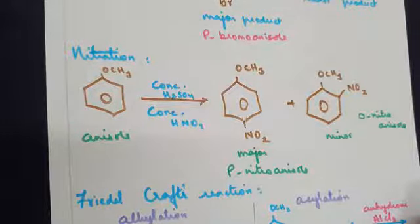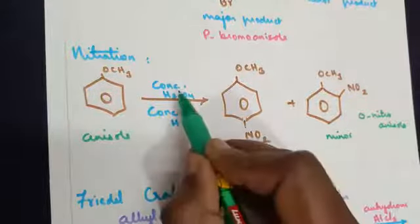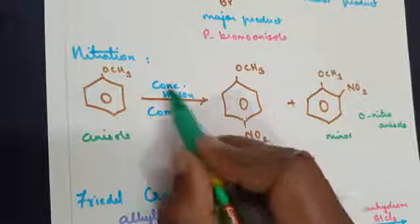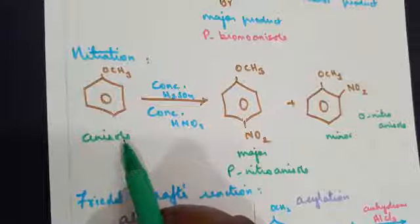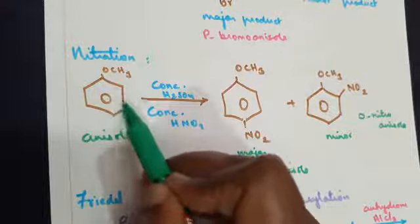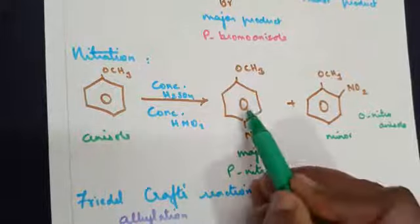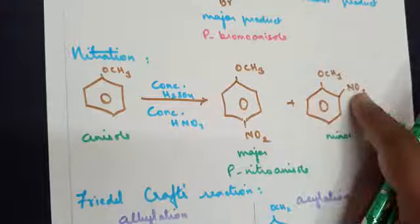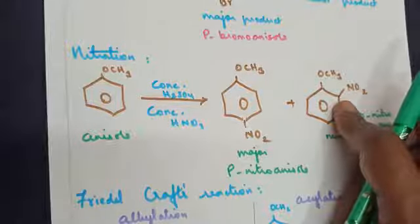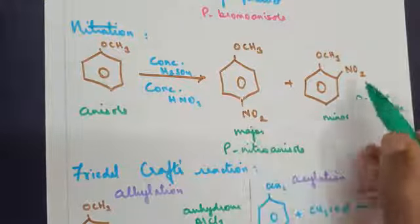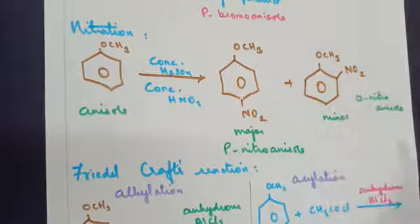In terms of nitration, earlier I told you nitration uses concentrated nitric acid and concentrated H2SO4. Here again, we are considering anisole because it's methoxybenzene, aryl ether category. Here also, two types of products: one at the para position, one at the ortho position. You can change and write, that's not a problem. Always para position will be the major product, ortho position will be the minor product.